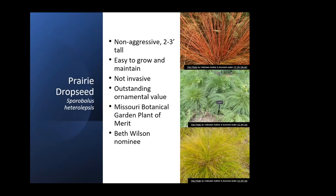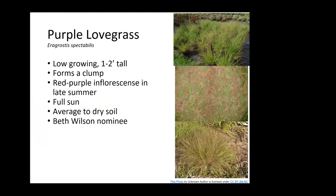Purple lovegrass is another one Beth loved — they use the red-purple inflorescence in flower arrangements. It's low growing, only one to two feet tall, takes average to dry soil and full sun. This is another grass that's not going to cause you problems coming up everywhere — it's tidy and pretty.